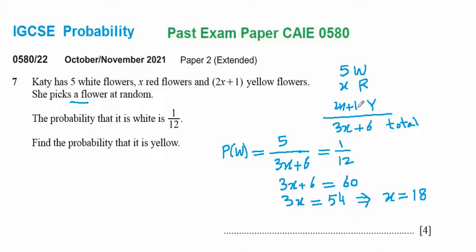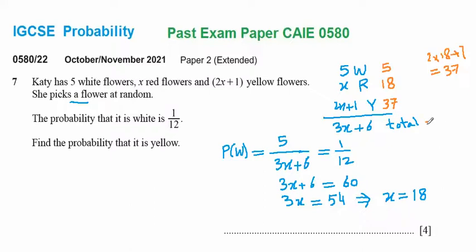With x equal to eighteen, we have eighteen red flowers and two times eighteen plus one, which is thirty-six plus one, giving thirty-seven yellow flowers. The total is three x plus six equals sixty, so we have five white, eighteen red, and thirty-seven yellow flowers, totalling sixty.